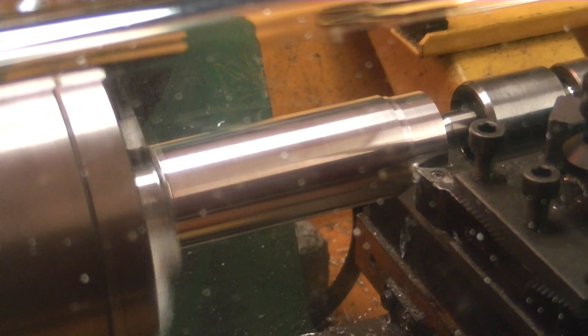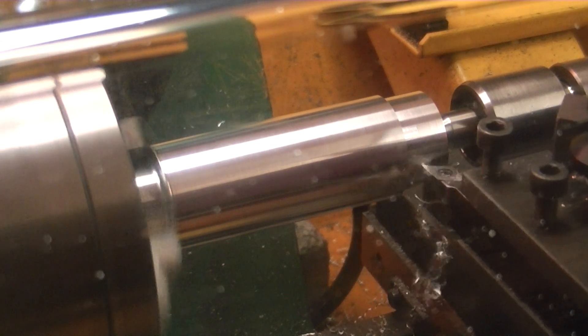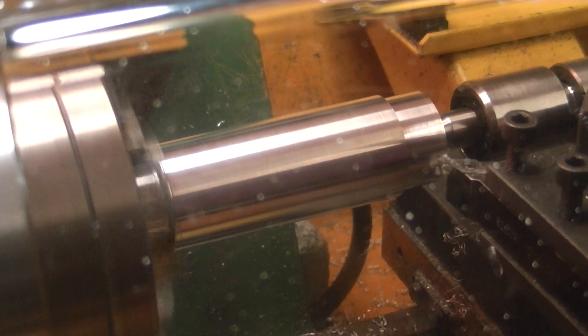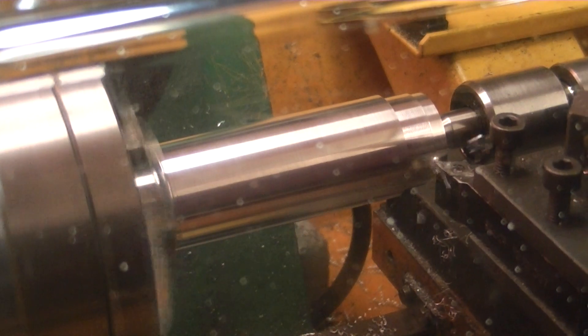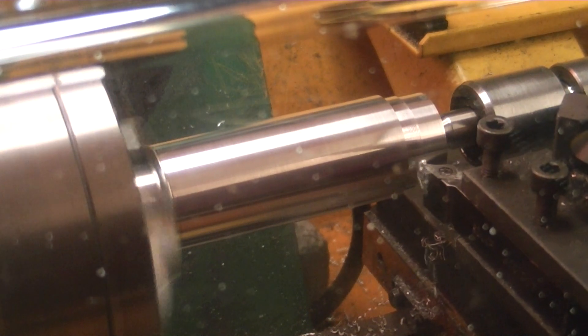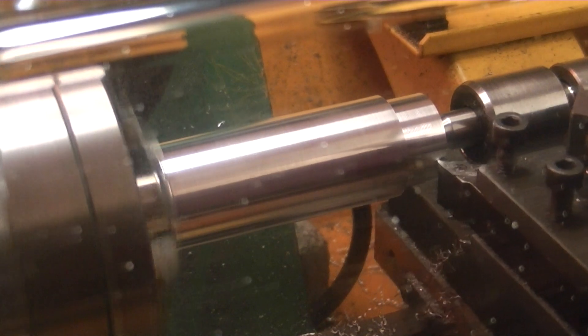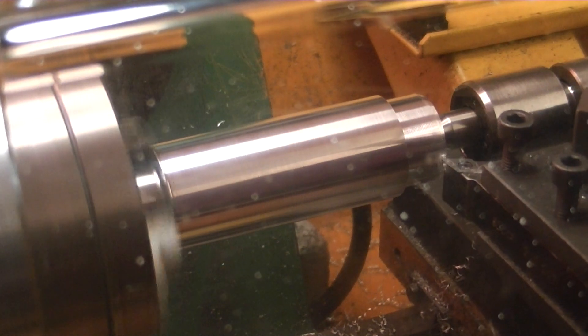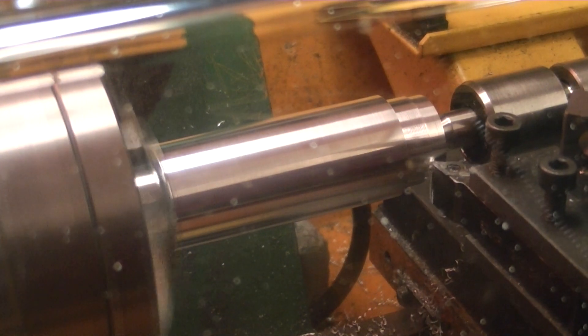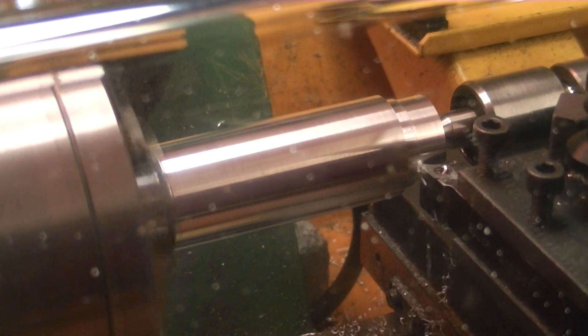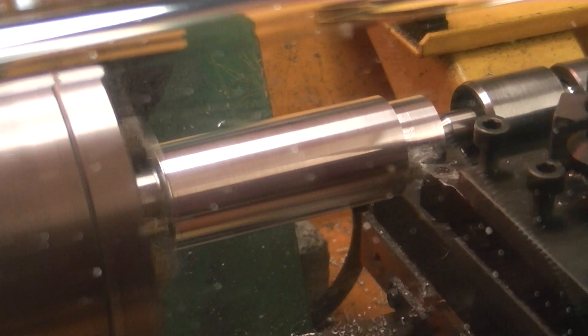The depth of cut is 0.5mm for each pass. So from that you can see that it's going to do 14 passes to complete the 7mm depth of cut off the radius. We should finish with a 12mm length of 6mm diameter.